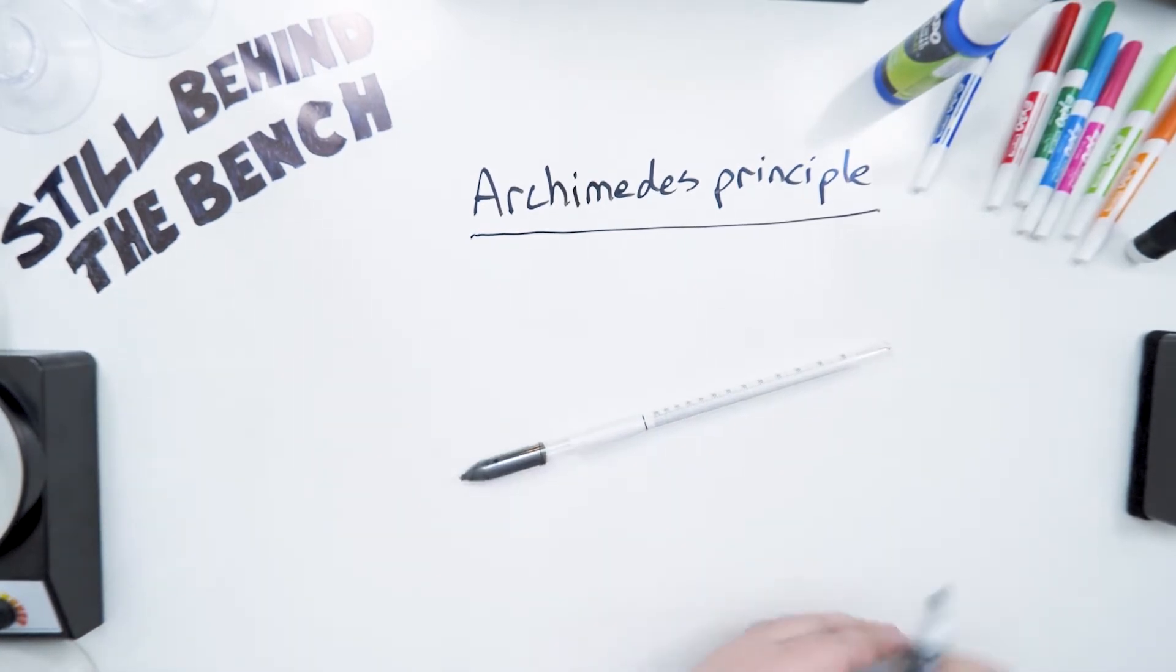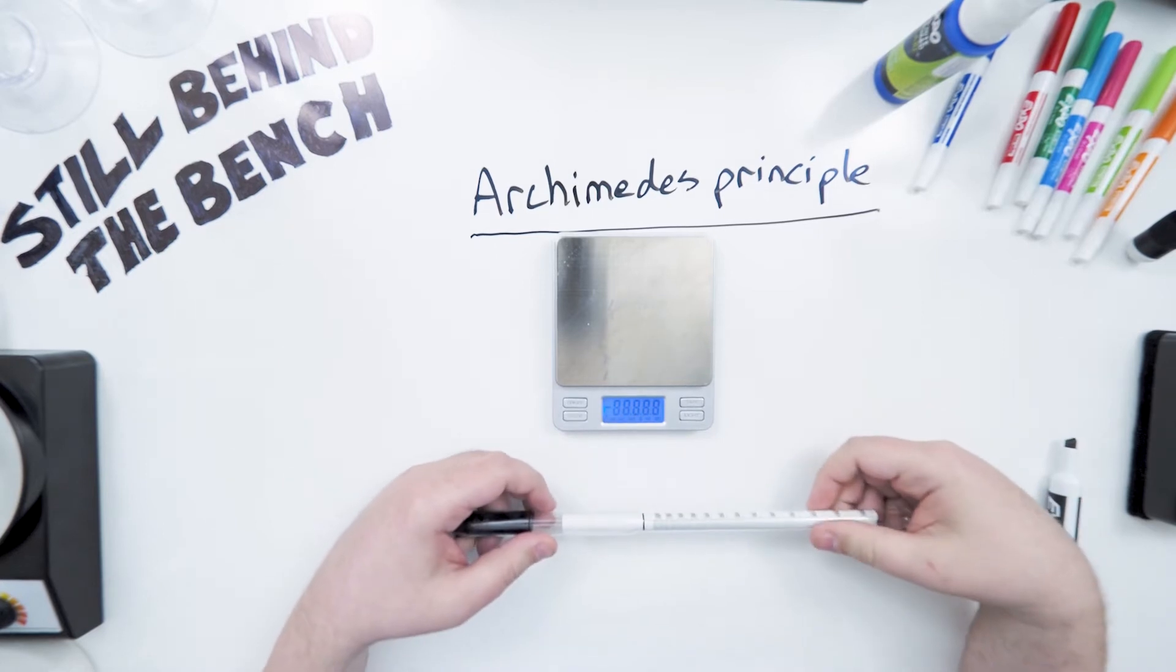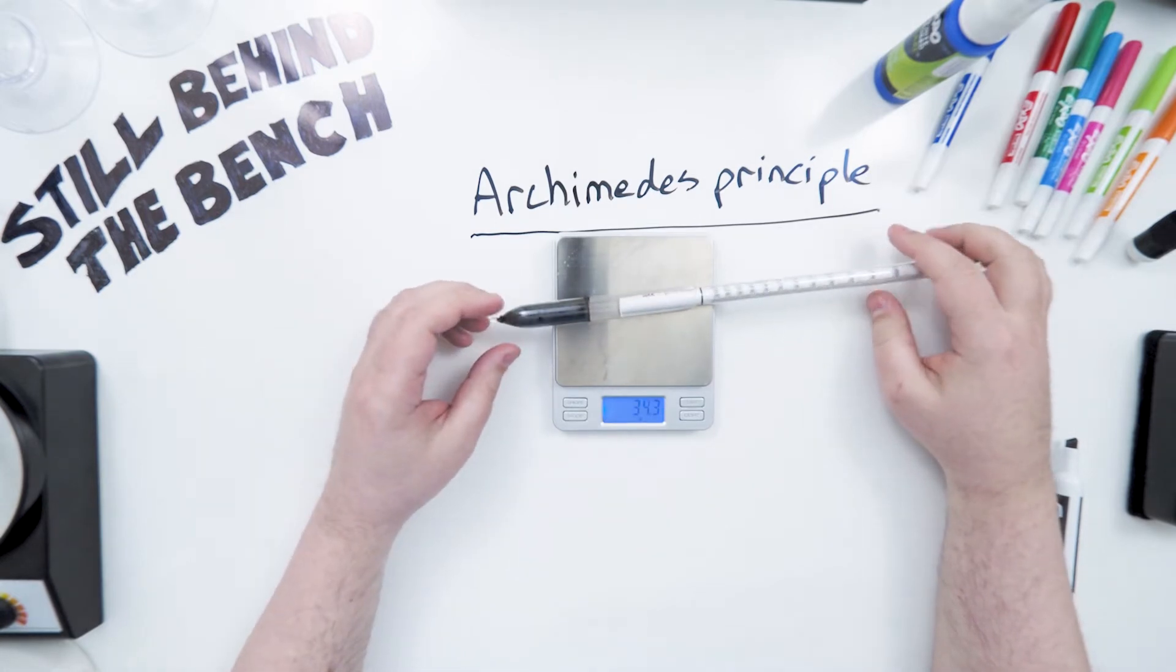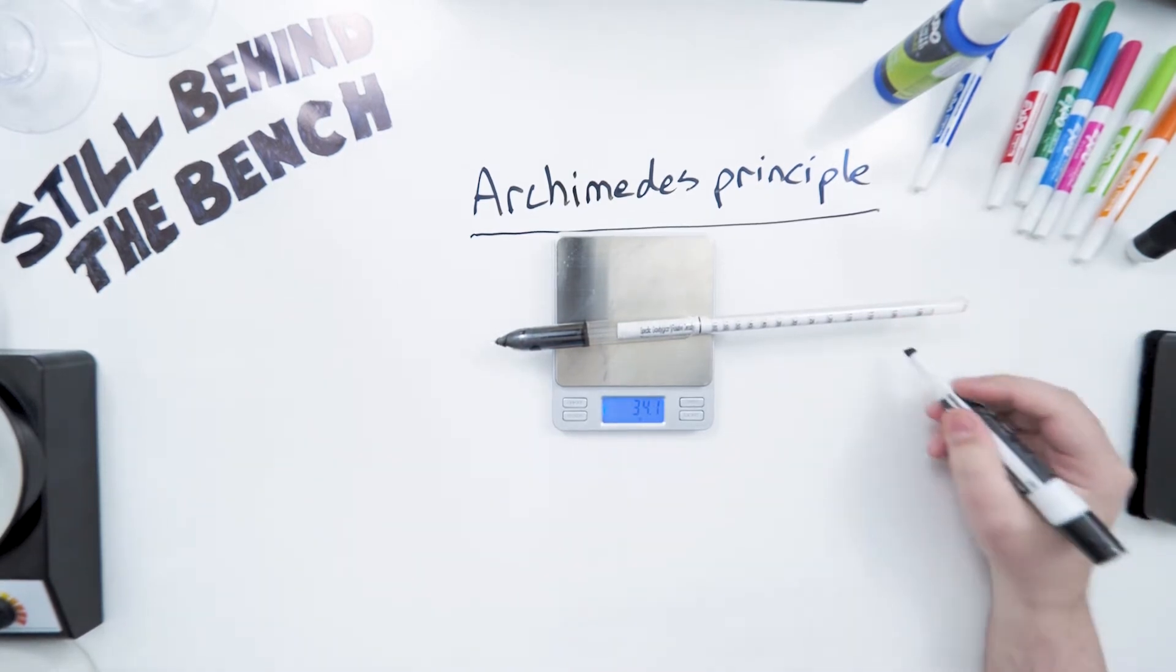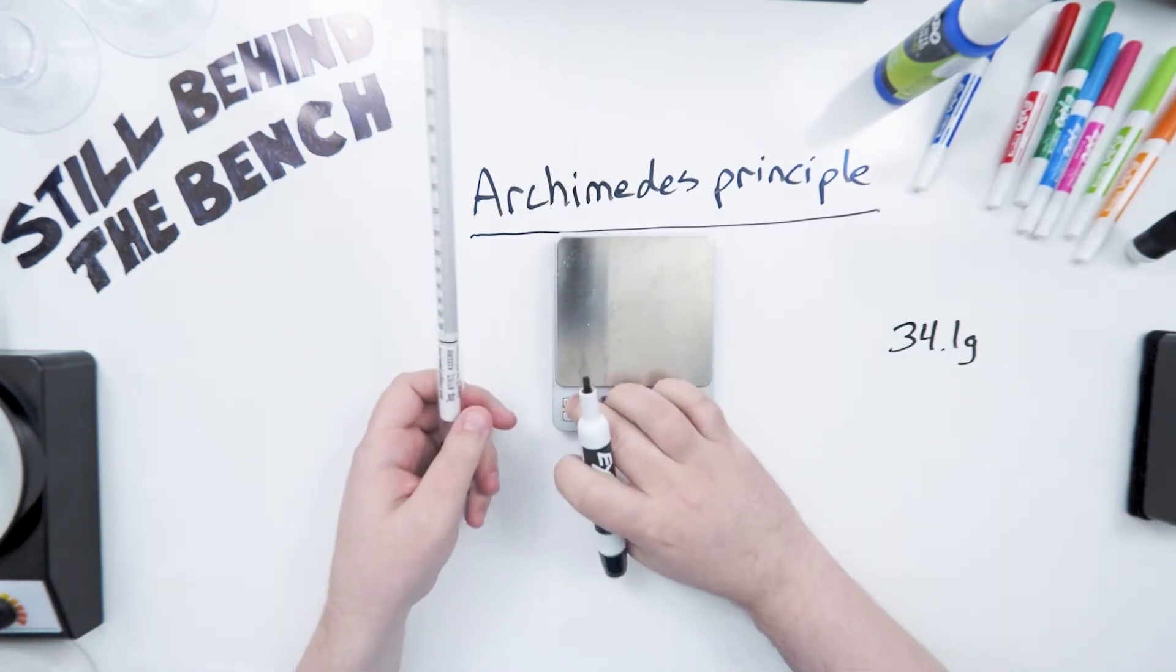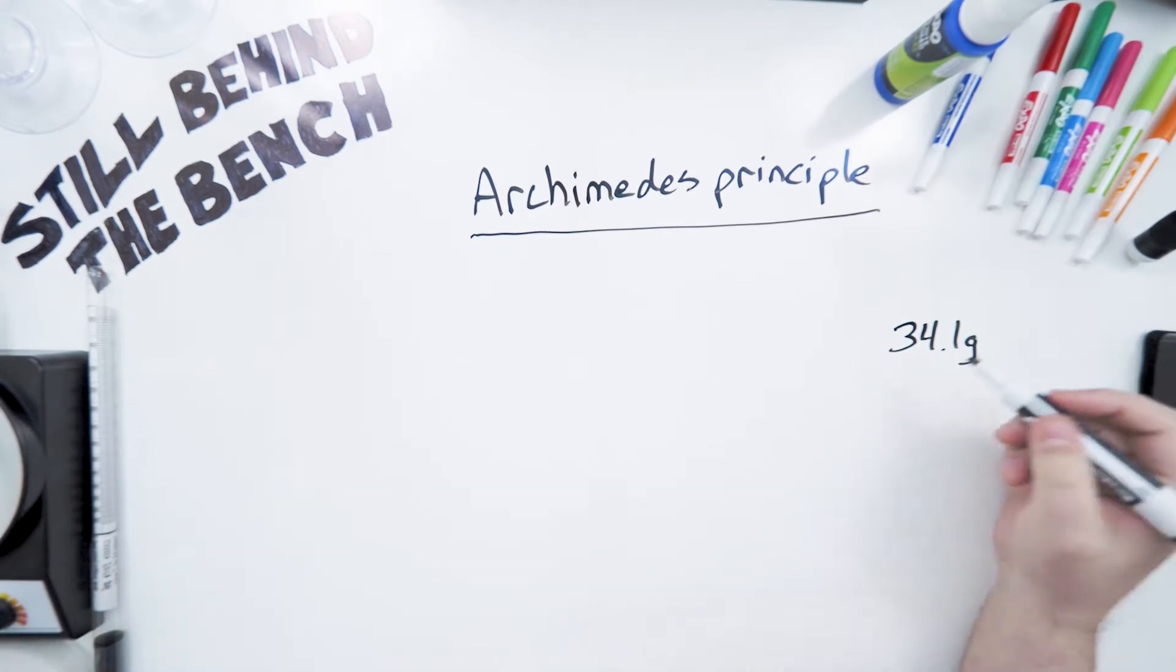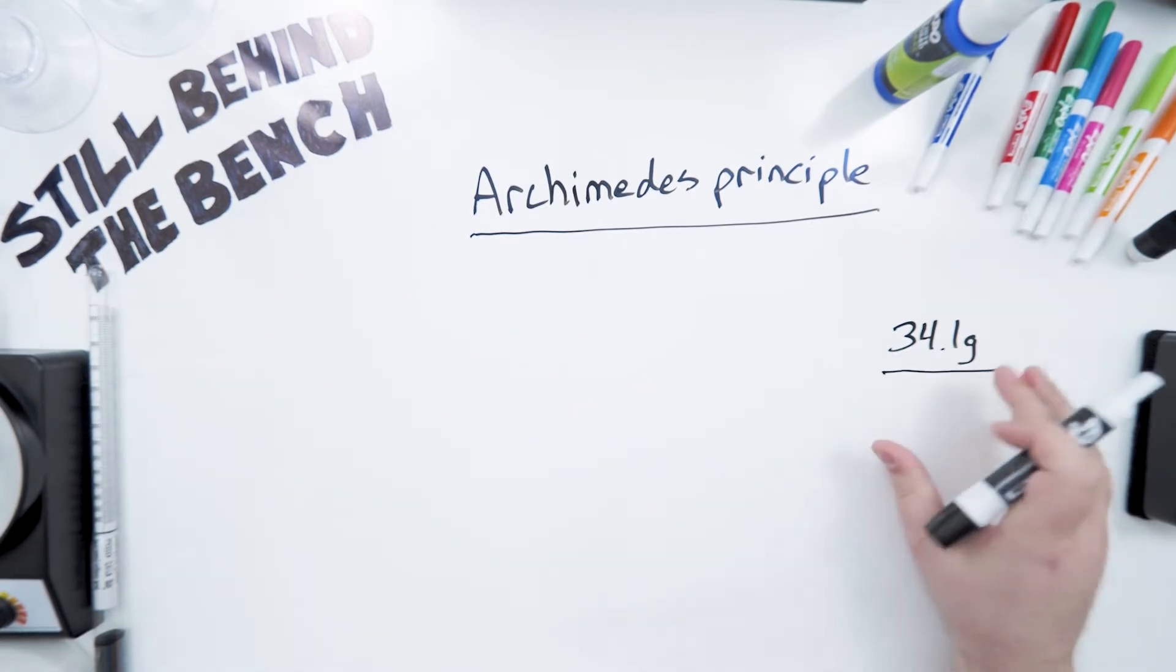So this hydrometer, we'll weigh it and see what it weighs. And it wants to roll. All right, 34.1 grams. This means, regardless of what liquid is in the cylinder, the test cylinder that we'll be using, this hydrometer will always displace 34.1 grams worth of liquid.